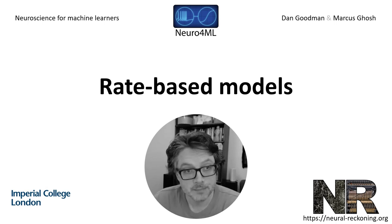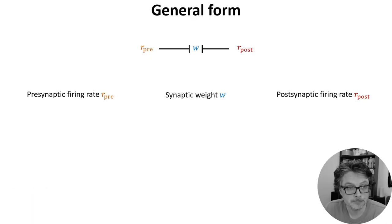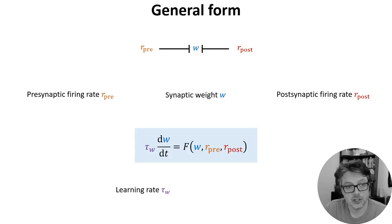In this video, we'll talk about rate-based Hebbian models of learning. We're only going to discuss learning of a synaptic weight w in response to a presynaptic neuron firing spikes at a rate r_pre and a postsynaptic neuron firing at a rate r_post. We're going to model this with a differential equation saying that the weight changes at a rate tau_w proportionate to some function f of the weight and the pre and postsynaptic firing rates. So different functions f are going to give you different models.